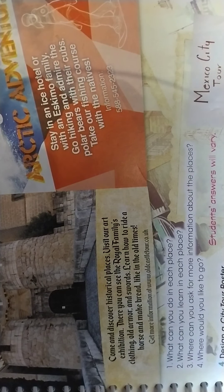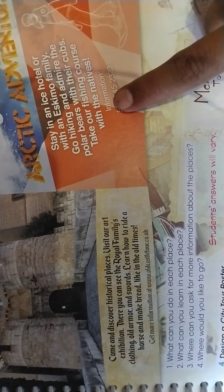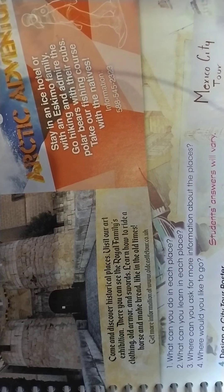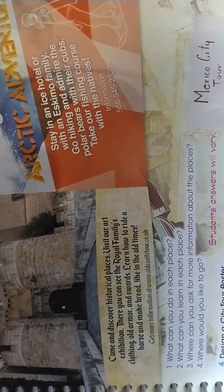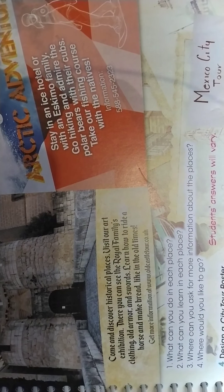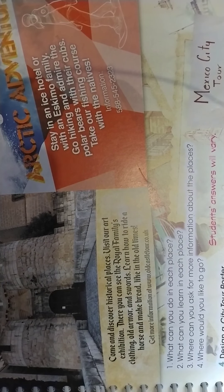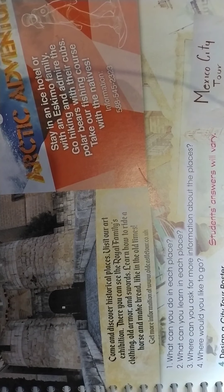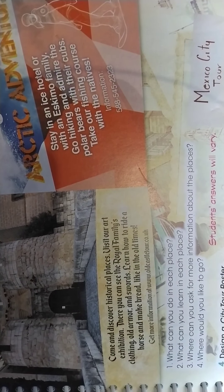Very good. Number three: Where can you ask for more information about the place? Obviously, for more information, you can write the telephone number. And number four: Where would you like to go? This is more personal. I would like to listen to your suggestions and the reasons why you want to go to that place. Remember, these are online classes and you have to show as much English as you can. You can use the translator if you will, but remember to be aware of what it says. You can use Google Translate to make your answers, but you won't send everything directly. You have to understand what you are writing.